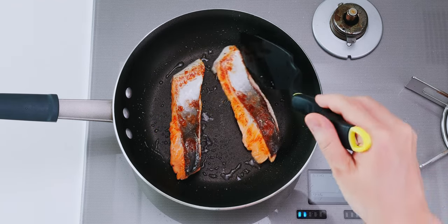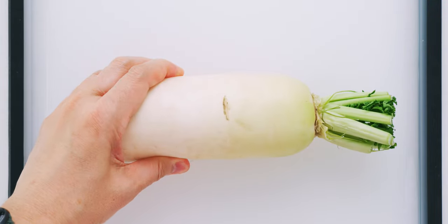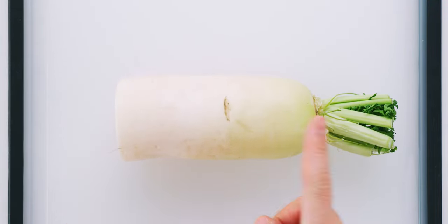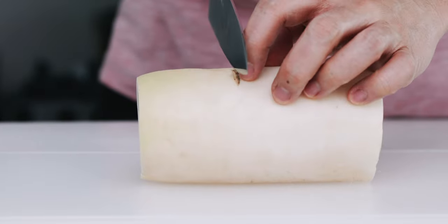While we wait for the salmon to cook, let's prepare the daikon oroshi. I've got the top half of a daikon radish here, which works best for raw preparations because it's sweeter and less spicy than the root end.